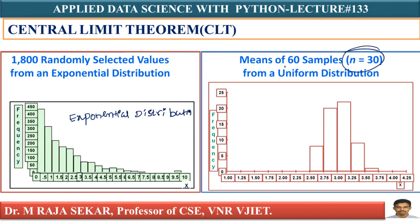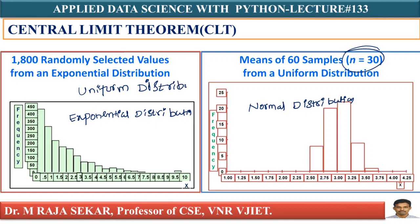I am taking a sample size of 30 and calculating the mean. After calculating the mean and plotting it, I am getting a normal distribution. In the previous slide, I showed that uniform distribution is transformed into normal distribution if I take a sample of size 2 and calculate the mean. The sample mean mu and population mean mu are the same, and the standard deviation decreased from 2.236 to 1.58.